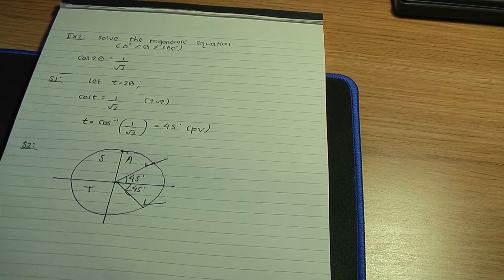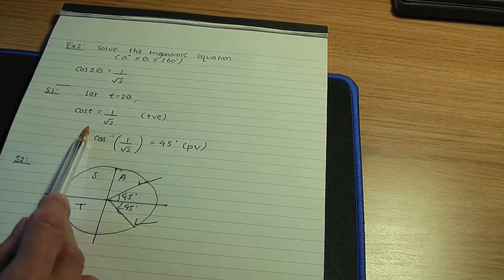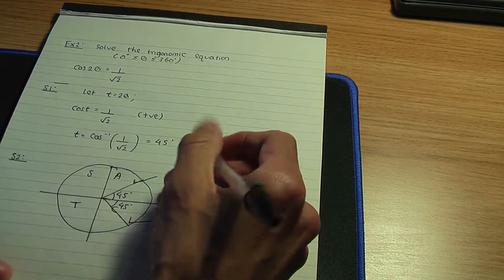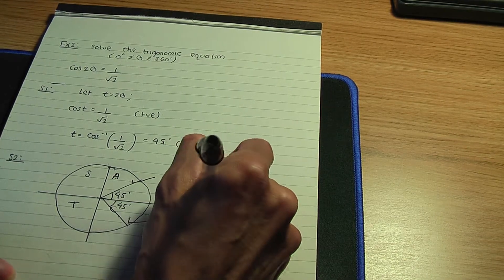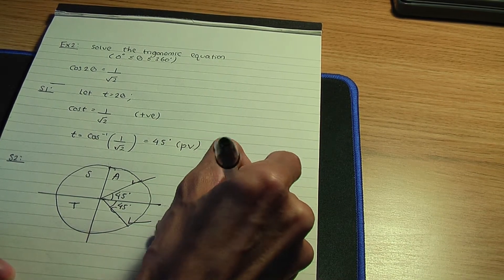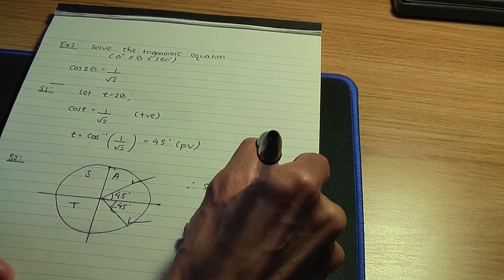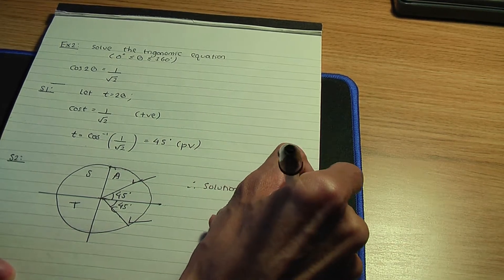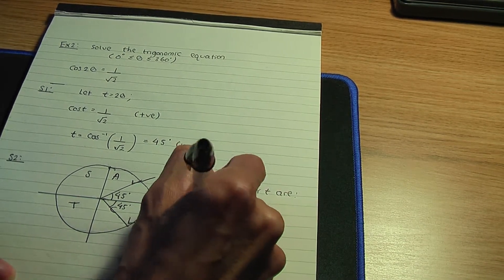So let's work out the solutions for t. Remember, these are the solutions for t. Therefore, solutions for t are: